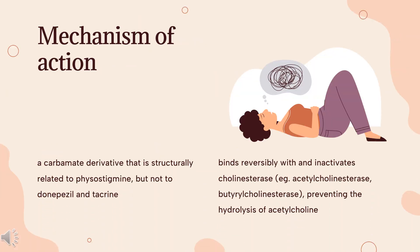Mechanism of Action: Rivastigmine is a carbamate derivative structurally related to physostigmine, but not to donepezil and tacrine. It is suggested that rivastigmine binds reversibly with and inactivates cholinesterase — e.g., acetylcholinesterase and butyrylcholinesterase — preventing the hydrolysis of acetylcholine, and thus leading to an increased concentration of acetylcholine at cholinergic synapses. The anticholinesterase activity of rivastigmine is relatively specific for brain acetylcholinesterase and butyrylcholinesterase compared with those in peripheral tissue.